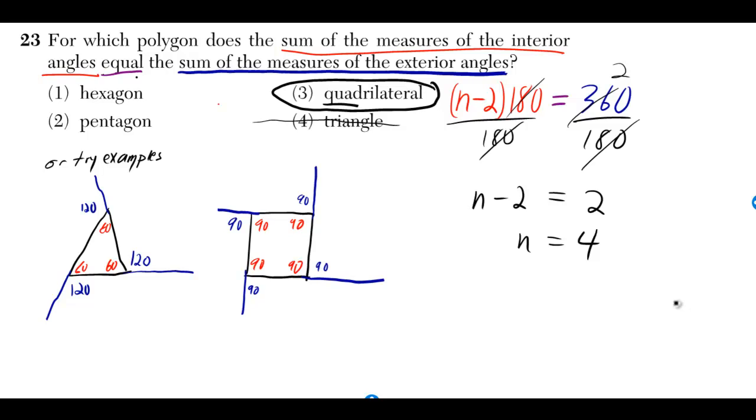For which polygon does the sum of the measures of the interior angles equal the sum of the measures of the exterior angles?